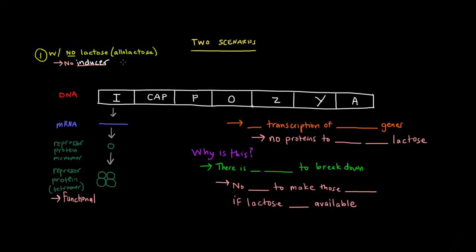So what's going on when there's no lactose around? First, the regulatory gene is transcribed and produces an mRNA, which is translated into a repressor protein monomer. Once four of these monomers are formed, they form the functional repressor protein — it's actually a tetramer. This repressor protein then binds at the operator, and once bound there, it blocks RNA polymerase that binds at the promoter. The repressor protein stops transcription — it represses transcription.